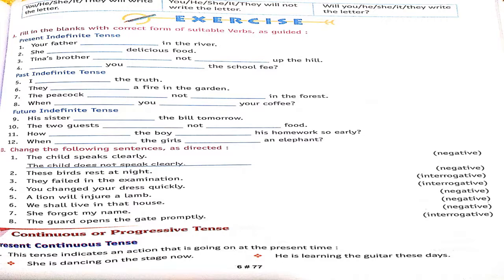For the ninth sentence, it is future: 'His sister will pay the bill' — meaning she will pay tomorrow. Now look at the B question: if negative is written, I changed 'speaks' to 'does not speak'. For the next sentence with 'birds' — birds are plural — so I write 'do not'. In this way we also make interrogative sentences.